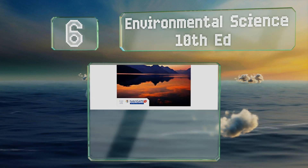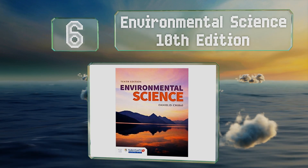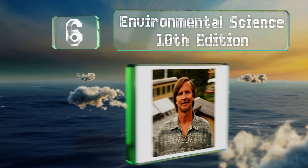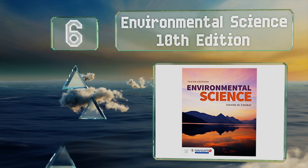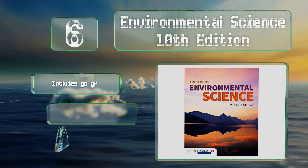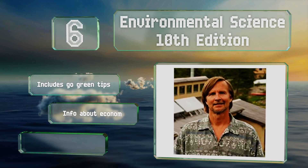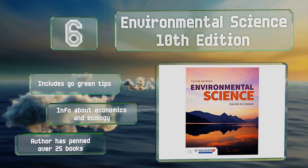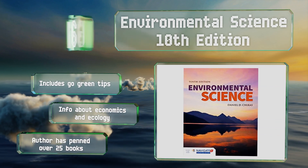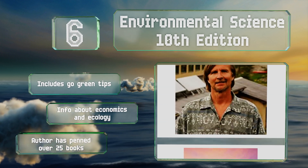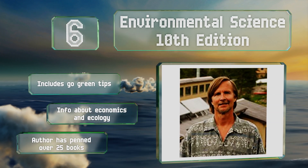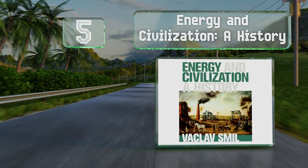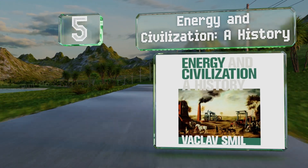Moving up our list at number 6, while the title might not win any awards for creativity, 'Environmental Science, 10th Edition' by Daniel Chiras is nevertheless a relevant introductory text for undergraduates. It's been noted as a fair choice that attempts to offer both sides of contentious issues. It includes tips for going green and information about economics and ecology. The author has written over 25 books.